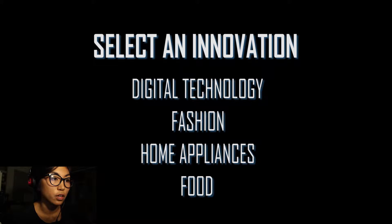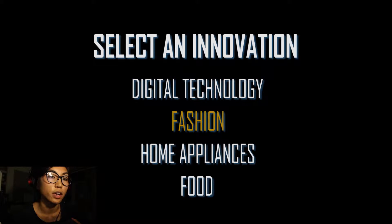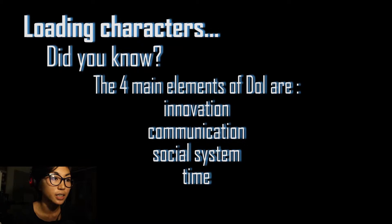First, let's choose an innovation. I'll choose fashion, just to test it out. The name of the theory itself suggests that a social system does not accept an innovation all at the same time. Therefore, the social system is divided into categories. That's what these characters are based on.